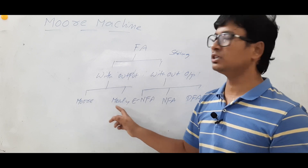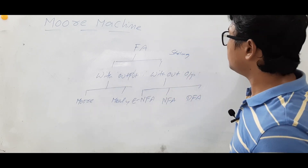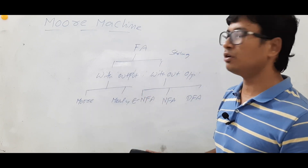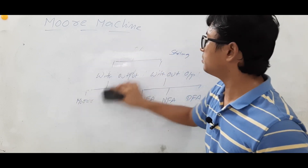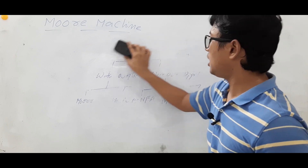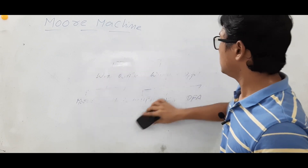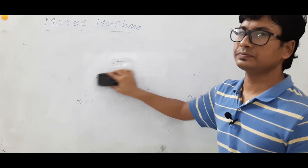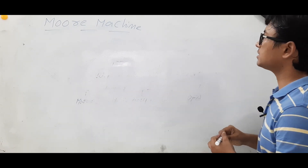We will discuss the conversion of a Moore machine to a Mealy machine and vice versa. I hope you have understood the basic difference between finite automata with output and without output. Now we will discuss the Moore machine — how it can be represented and what is the basic functionality of the Moore machine.